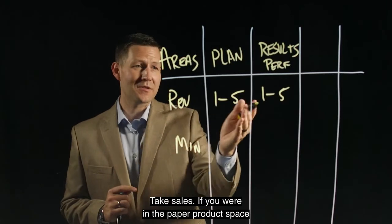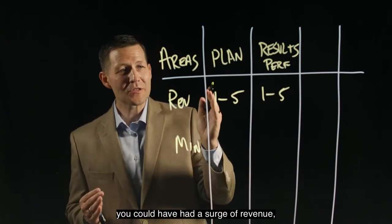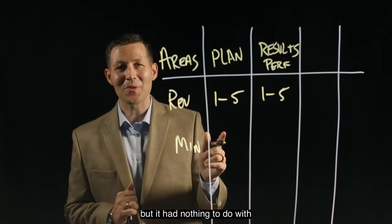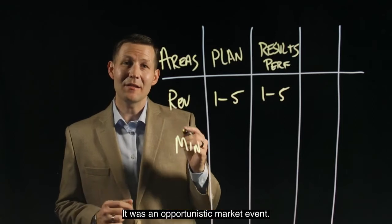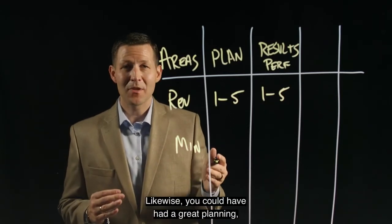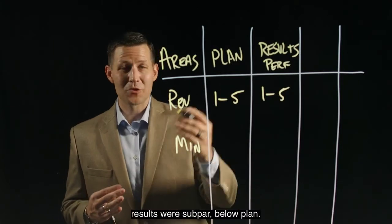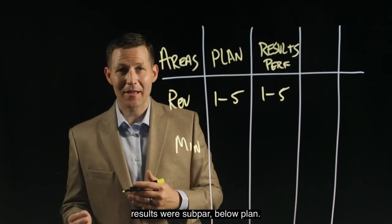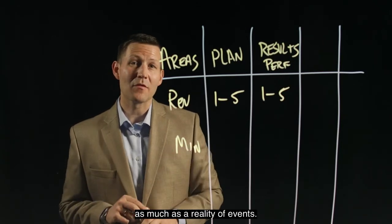Take sales. If you were in the paper product space in the middle of COVID, you could have had a surge of revenue, but it had nothing to do with the diligence of your planning. It was an opportunistic market event. Likewise, you could have had great planning, but due to a regulatory event or some other catastrophe, results were subpar, below plan, but it's not a reflection on the planning discipline as much as a reality of events.